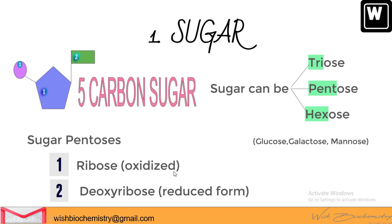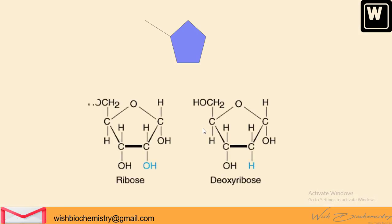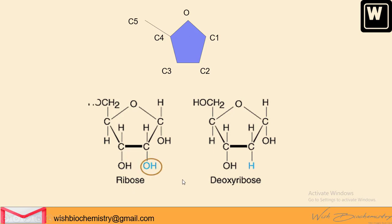Ribose is the oxidized form and deoxyribose is the reduced form. In the chemical structure, carbon atoms are numbered clockwise from the right, and the last carbon atom — carbon number 5 — is located outside the ring, with an oxygen atom at the top. The difference between ribose and deoxyribose lies at carbon number 2: in ribose, carbon 2 is attached to a hydroxyl group, while in deoxyribose there is a hydrogen atom at carbon number 2.